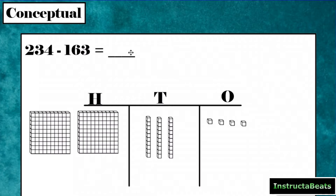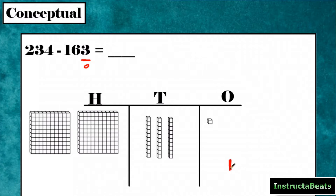We want to take away 163. We always go right to left when we subtract, so we're going to take away our ones place first. We have four ones and we want to take away three of them, which leaves us with a one left in the ones place. Moving to our tens place, we have three tens and we want to take away six tens. But I can't take away six if I only have three — more on the floor, go next door and get 10 more.